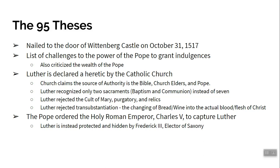Once he developed his ideas, Luther wrote the 95 Theses — a list of 95 things he disliked about the Church and thought needed to change. They were posted on the door of Wittenberg Castle on October 31st, 1517, as a list of challenges to the Pope, criticizing the Pope's wealth and calling out what Luther felt was being done wrong.